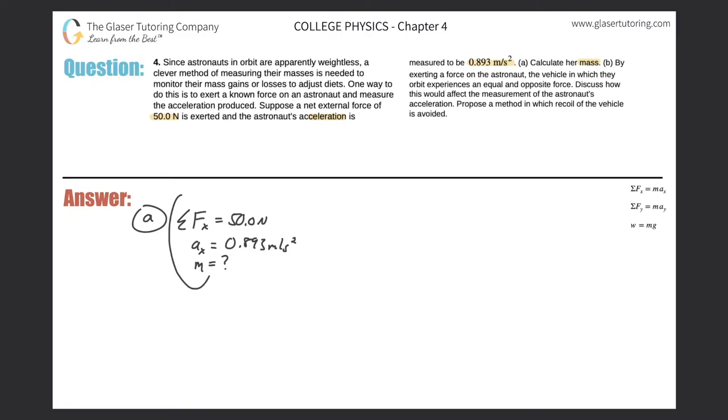So in order to do so, let's see if we find an equation that relates those three variables, and we have one right here on the right hand side. We know that the sum of the forces in the x direction should equal the mass of the object multiplied by the acceleration in that same dimension. So we have the force being 50 newtons, the mass being the unknown, and the acceleration being 0.893.